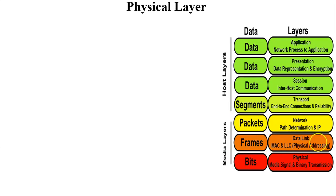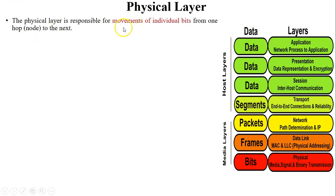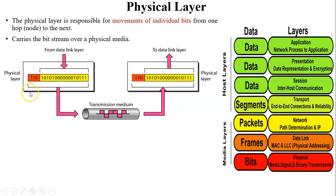The next layer is the physical layer. When frames come from the data link layer to the physical layer, they are converted into a bit stream. The physical, data link, and network layers are called the media layers, while the upper four layers are called host layers. The physical layer is responsible for transferring bits from one hop to another hop. The sender's bit stream is sent through physical media and received at the physical layer of the receiver side.